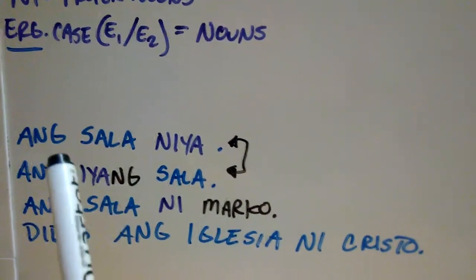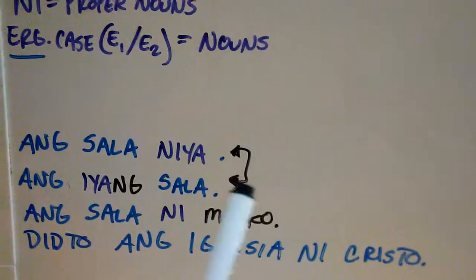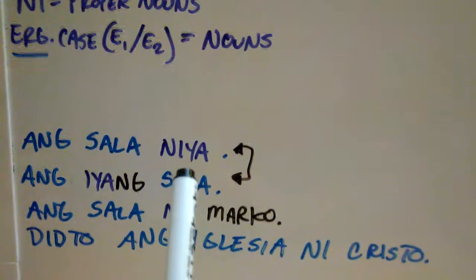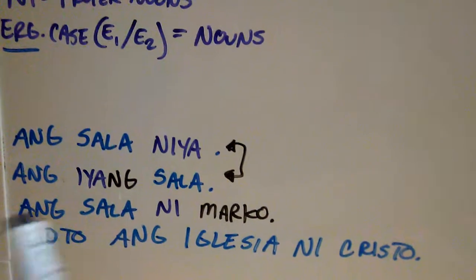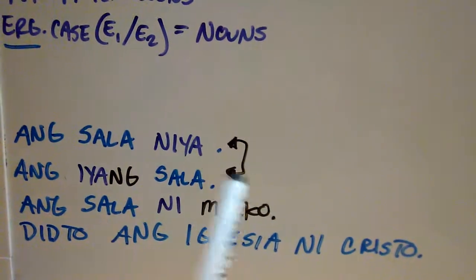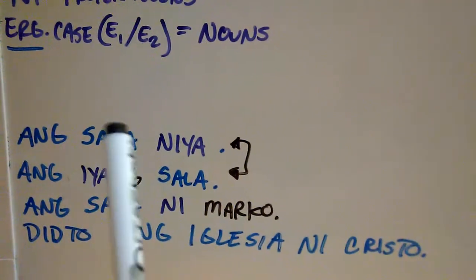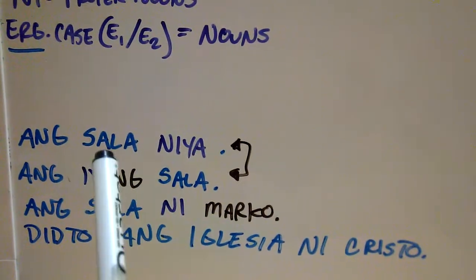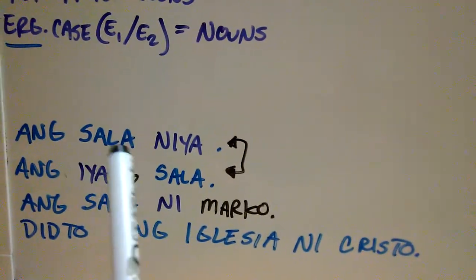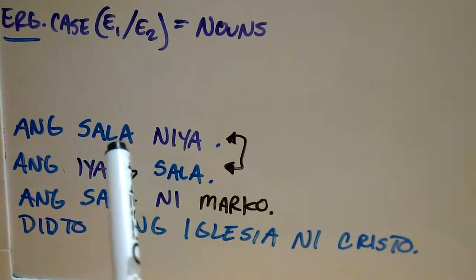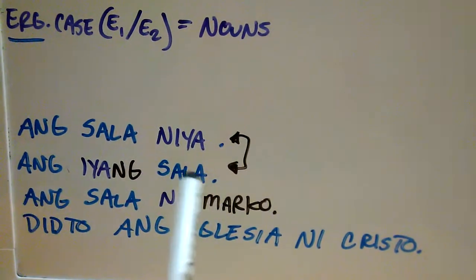Ang salat niya — this means his or her fault, or its fault. Niya is the third person singular, so it's going to be his, her, or it — somebody's fault. We just don't know who the person is. Notice: salat is marked with ang, but niya follows it. So even though salat is the focus, niya marks it as a possessive. Somebody owns that fault — somebody is at fault.